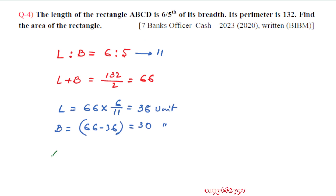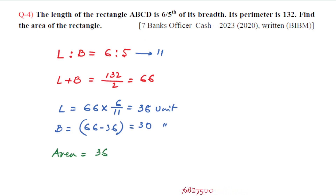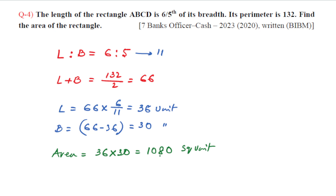Length is 36 and breadth is 30. Area equals 36 into 30, which equals 1080 square units. So 1080 square units is the answer.